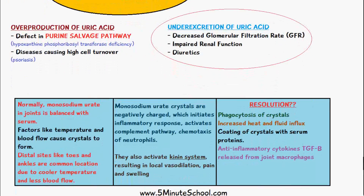Normally monosodium urate can be present in the joints, usually balanced with serum levels, but factors like temperature and the amount of blood flow can cause crystal formation. Gout is more common in the toes and ankles because these locations are much further from the center of the body, so the temperature is cooler and there is much less blood flow compared to the main trunk of the body.